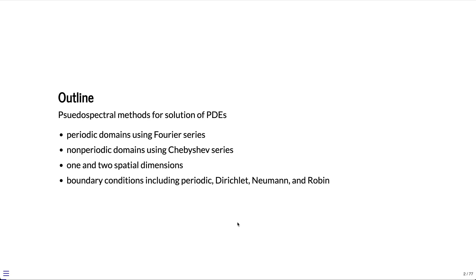We'll consider examples in both one and two spatial dimensions. Boundary conditions are obviously periodic for the Fourier series, and then for the non-periodic domains, we'll use Dirichlet, Neumann, or Robin conditions.